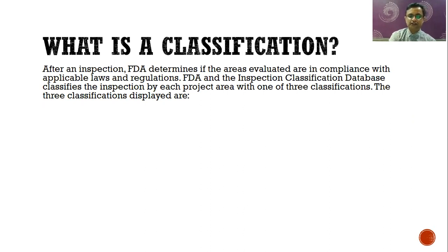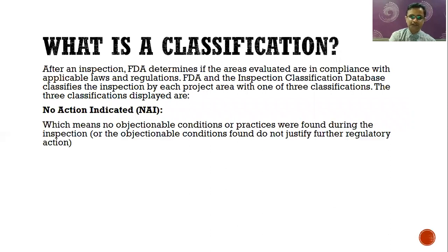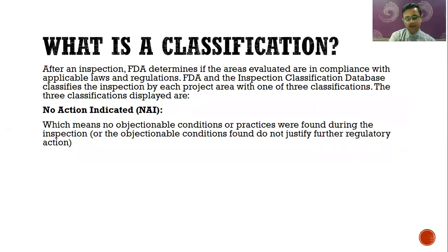The three classifications are: first is No Action Indicated (NAI), which means no objectionable conditions or practices were found during the inspection, or the objectionable conditions found do not justify further regulatory inspection or regulatory action. This means FDA may have some observations, but they are not objectionable and are not violating any FDA rules and regulations. So they will classify your site as No Action Indicated.